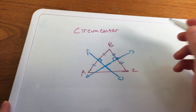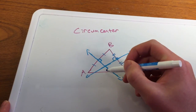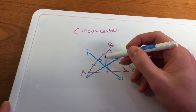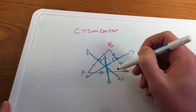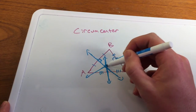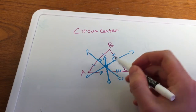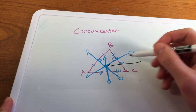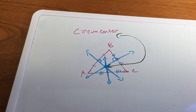Here's another perpendicular bisector, and for the last one on segment AC, we cut it directly in half and make it perpendicular. All three of these meet at one point — that point is called the point of concurrency of the three perpendicular bisectors of the triangle.